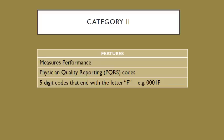Category two codes measure performance. They are used to measure a physician's quality reporting, or PQRS. You are asked to use those codes whenever applicable, and you will be directed in the parenthetical note when to use them. A category two code is a five-digit code that ends with the letter F — for example, 0001F.